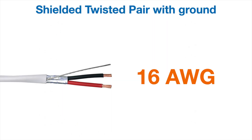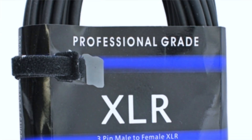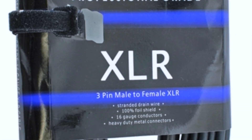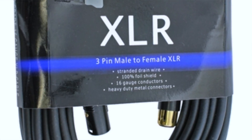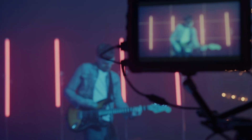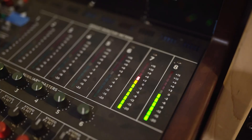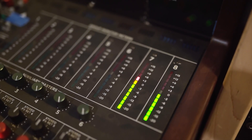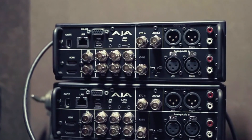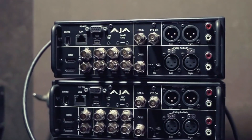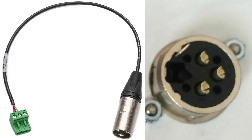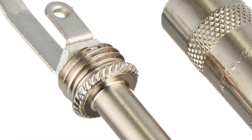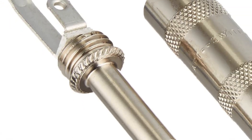Shielded twisted pair with ground wire or shield is used for audio and control signals. That wire gauge is usually preferred for audio signals. It's usually terminated to an XLR male or female input or output connector, a phoenix block, or other termination connection types that can also be used for this wire.